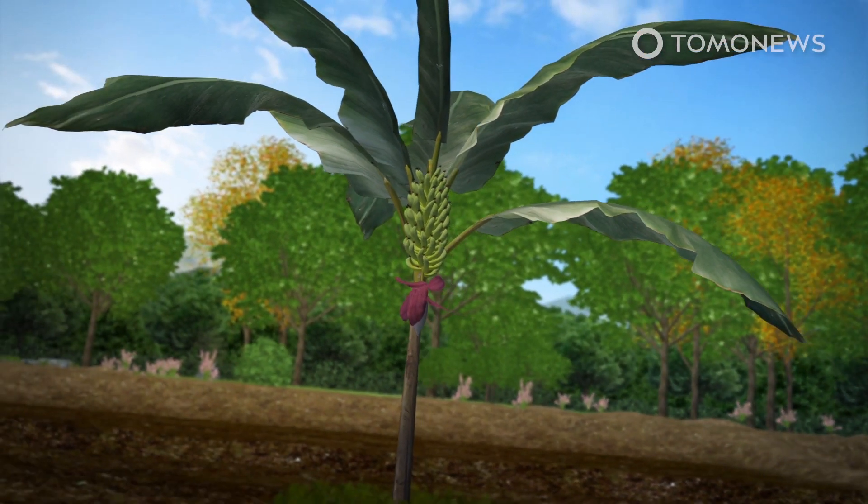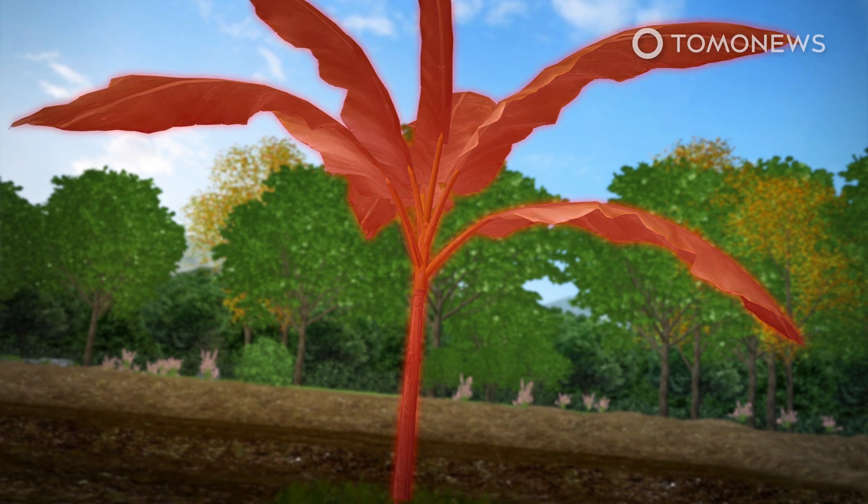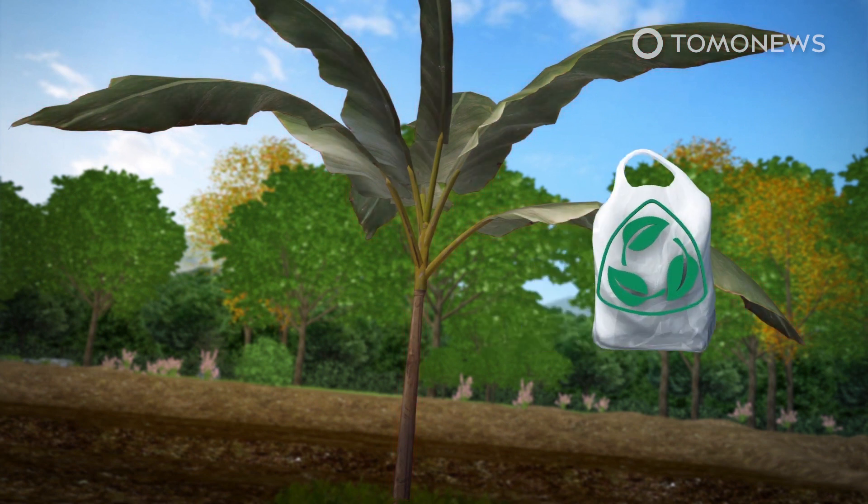The scientists have designed a new method that reduces this waste by reusing the pseudostem, or the banana's trunk, and turning it into biodegradable packaging.